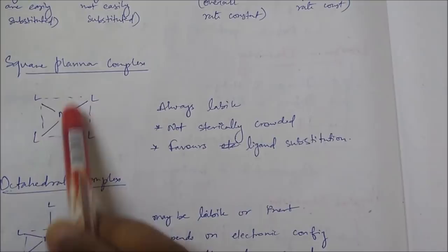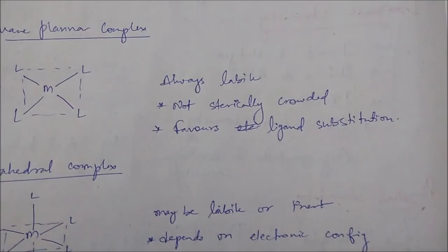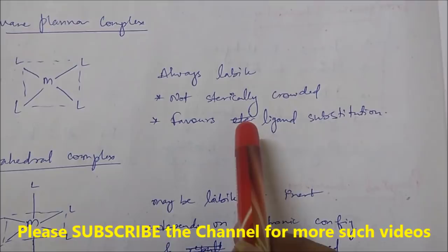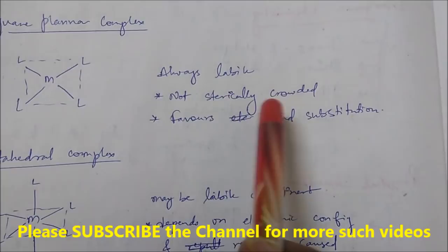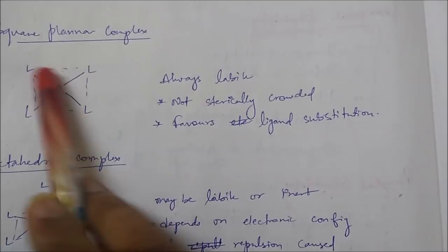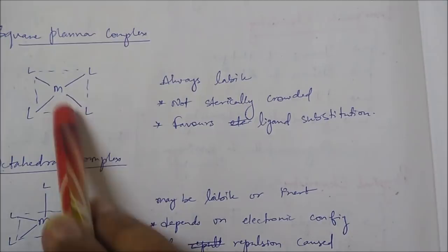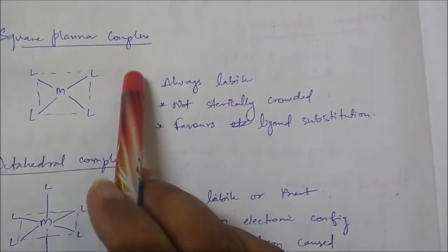Square planar complexes are not sterically crowded — the metal is open from the top and bottom. All four ligands lie on the plane, so there is nothing above or below. An incoming ligand can easily come from the upside, and if an existing ligand has good leaving ability, substitution can occur easily. Always remember: square planar complexes are always labile.